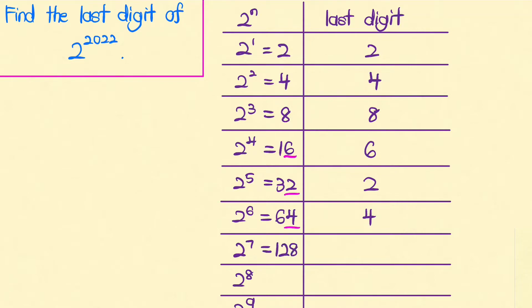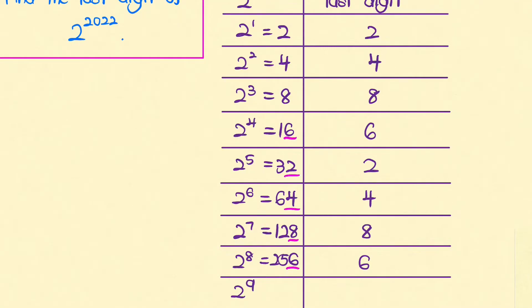If we look closely, we can actually see that there is something going on with these numbers. In particular, the first four numbers - 2, 4, 8, 6 - repeat.